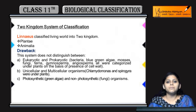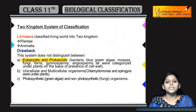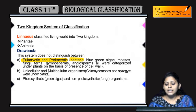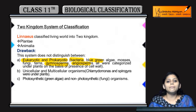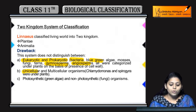Yeh system bhi fail ho gaya because wo eukaryotes aur prokaryotes ke beech distinguish nahin kar paye. For example, bacteria, blue-green algae, angiosperms, and gymnosperms — inhe plant kingdom mein rakh diya, though bacteria are prokaryotic organisms aur gymnosperms and angiosperms are eukaryotic organisms. Prokaryotes mein organelles absent hote hain, aur eukaryotes mein organelles present hote hain.